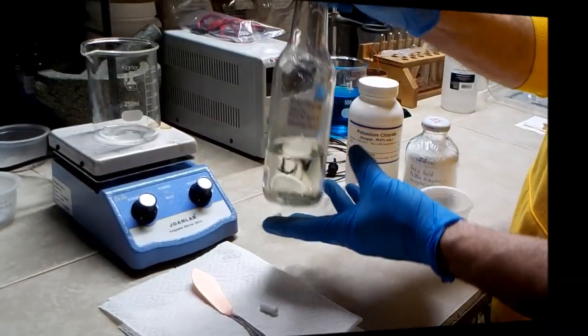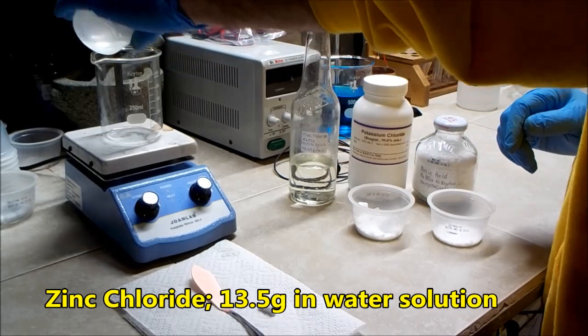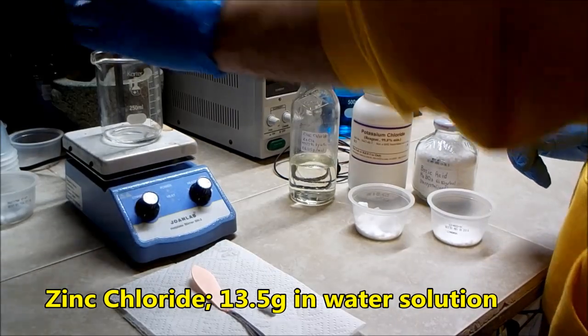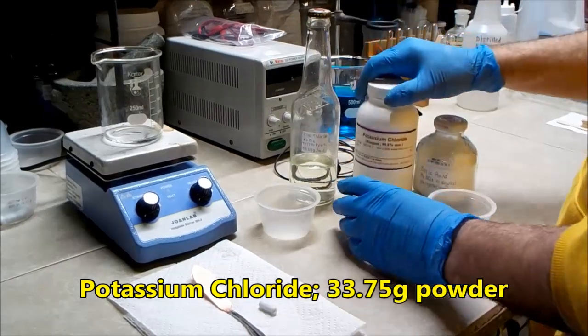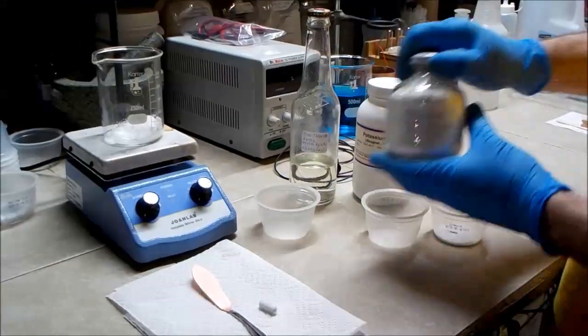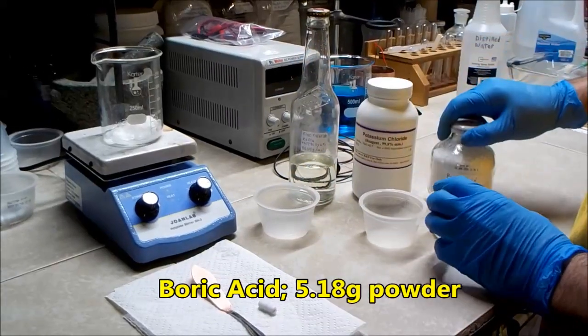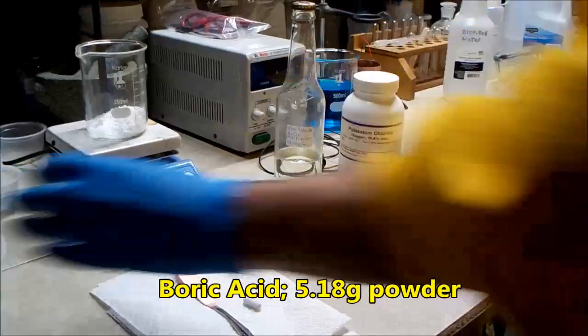Here I am preparing a zinc plating solution which consists of 13.5 grams of zinc chloride dissolved in water. This was taken from a stock batch of zinc chloride solution of known concentration. I also added 33.75 grams of potassium chloride powder and 5.18 grams of boric acid powder.